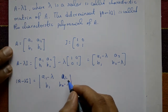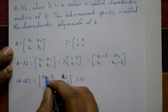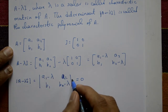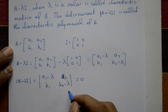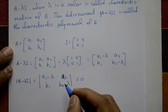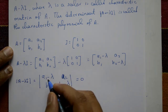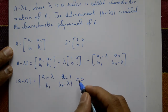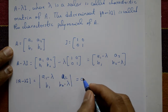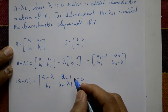Expanding this determinant gives one equation — that equation is called the characteristic equation. After solving it, the roots obtained are called the characteristic roots.